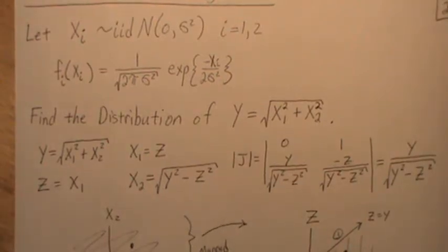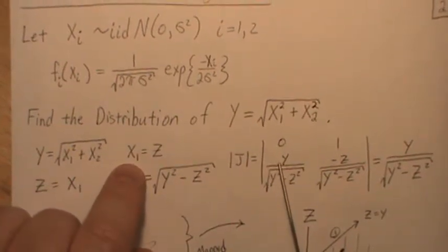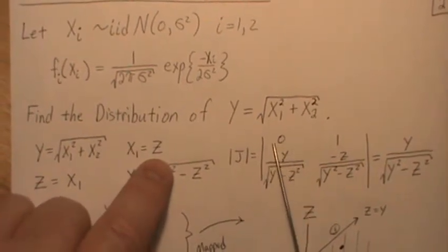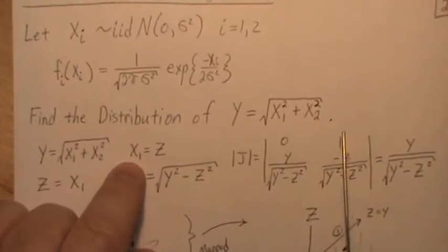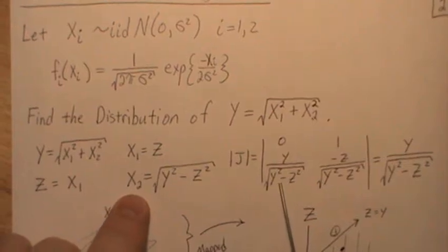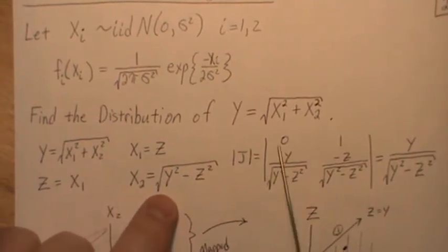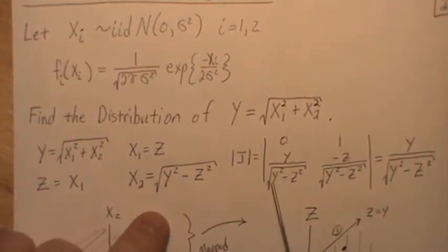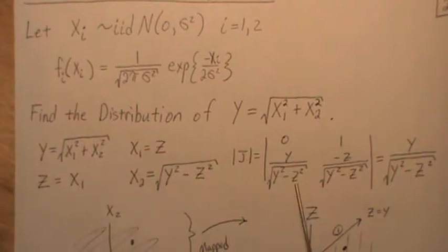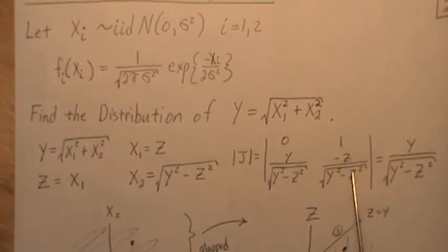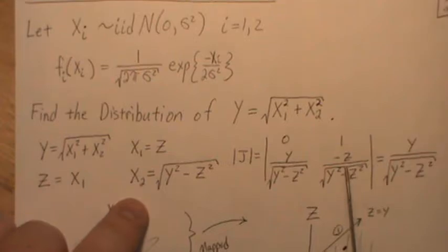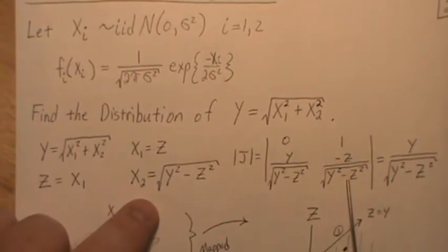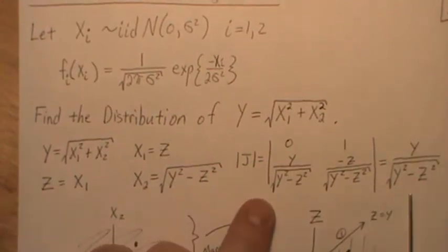Now the Jacobian is we take the partial of x1 with respect to y, so that's zero. The partial of x1 with respect to z, that's one. x2 is the partial of x2 with respect to y, and we get this, y divided by square root of y squared minus z squared. Now technically we don't need to know this one because when we take the determinant, this is zero, but this is what it is. So this would be the partial of x2 with respect to z, we take the determinant and we get this.